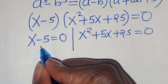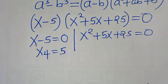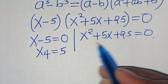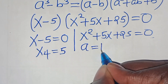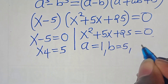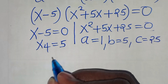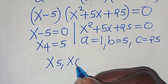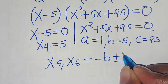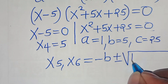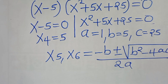From the first part, x₄ = 5. We solve for x₅ and x₆ from the quadratic x² + 5x + 25 = 0, with a = 1, b = 5, and c = 25, applying the quadratic formula: minus b, plus or minus the square root of b² − 4ac, over 2a.